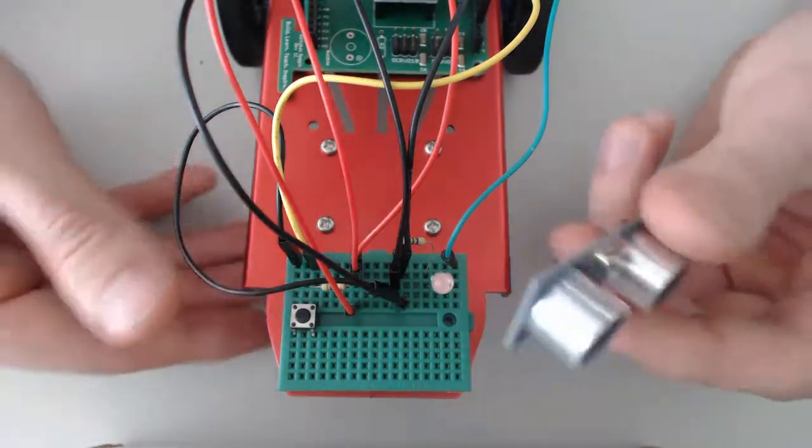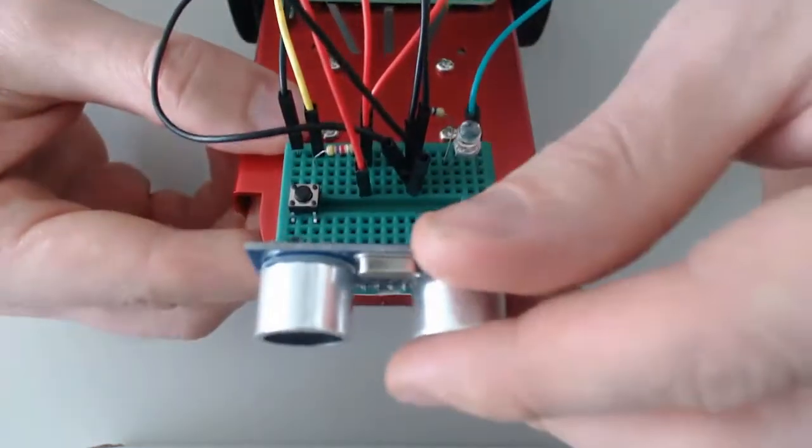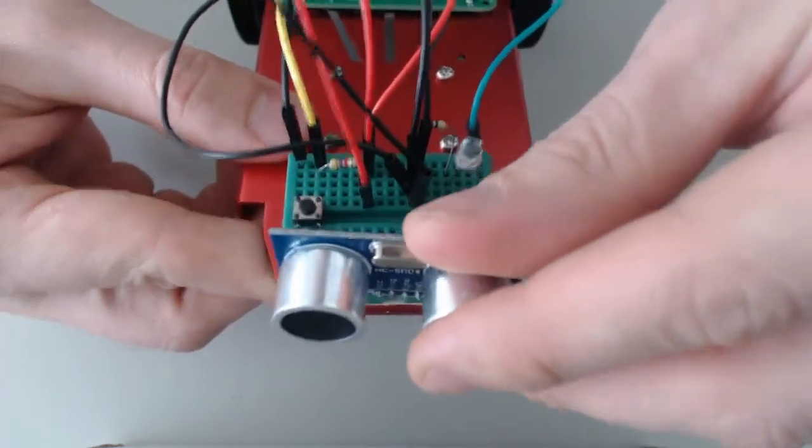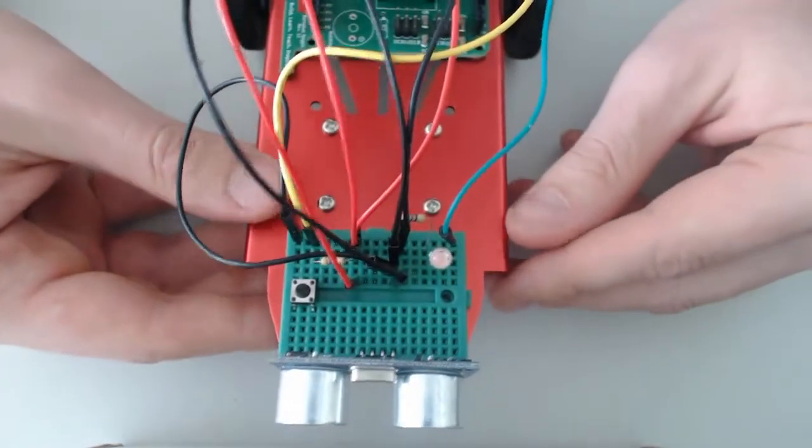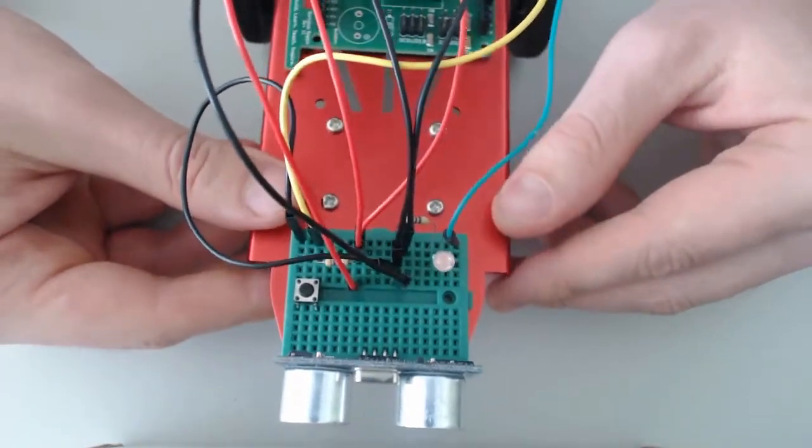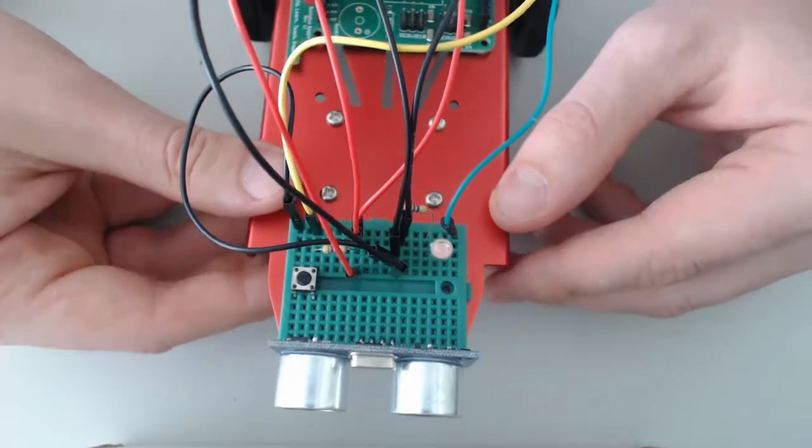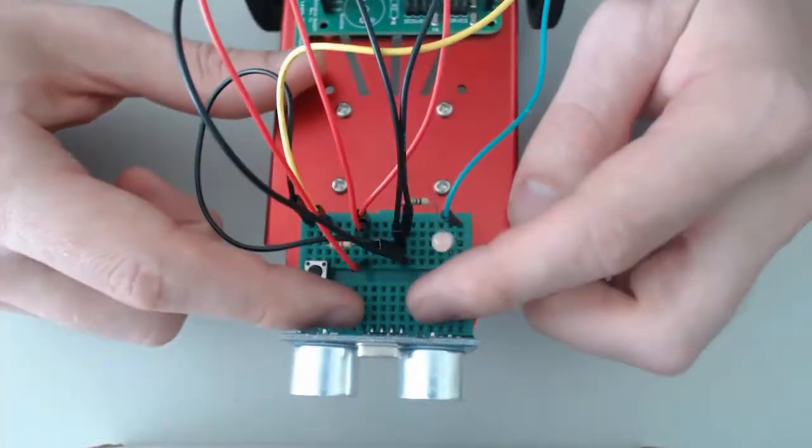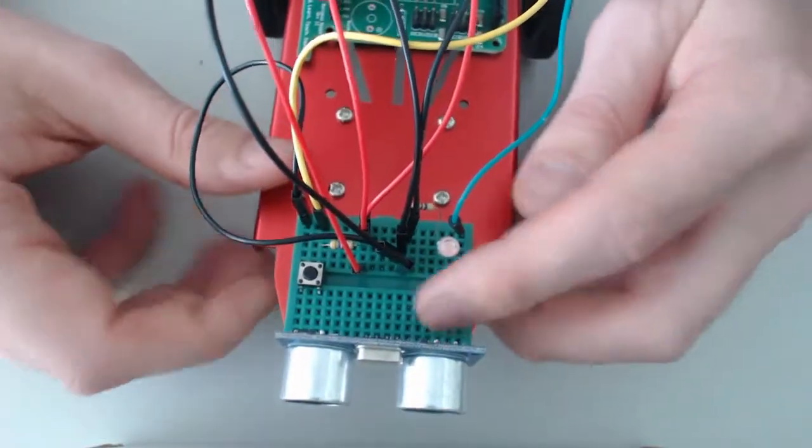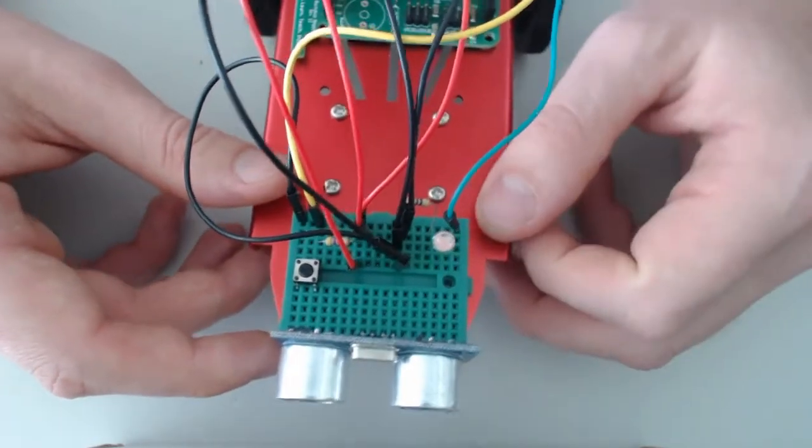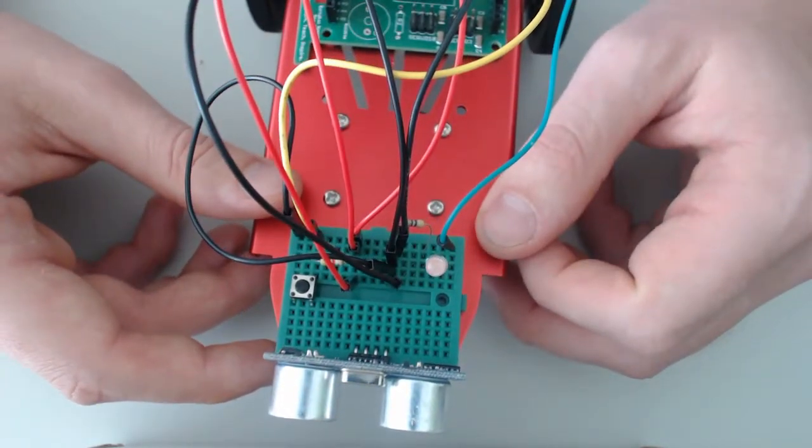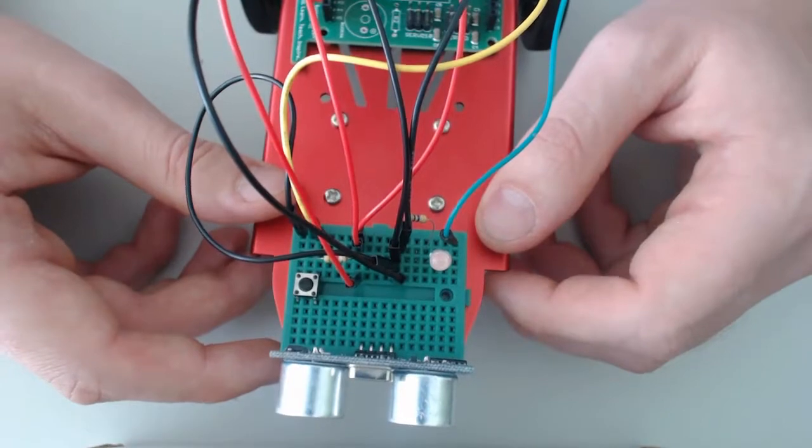I'm going to take my ultrasonic sensor and place it right here. You'll notice the ultrasonic sensor is basically all by itself on that side. You don't have to have this side of the breadboard completely clear, just these four rows that have the ultrasonic pins.